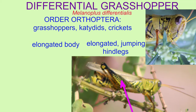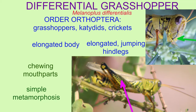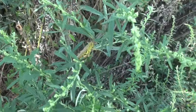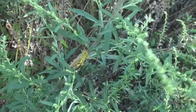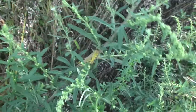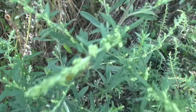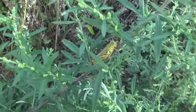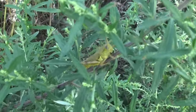They possess elongated jumping muscular hind legs, an elongated body, chewing mouthparts, and they undergo simple metamorphosis where the larvae resemble small adults.